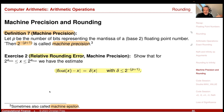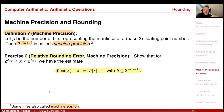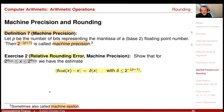We have the result that float(x) minus x equals delta times x, with delta less than 2^(−p+1) — the machine epsilon. This holds as long as x is in the range of the normalized floating-point numbers; if x rounds to infinity, much larger errors can occur. This result was stated as an exercise but was already proved in the last session.